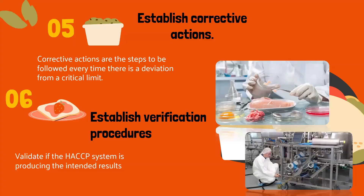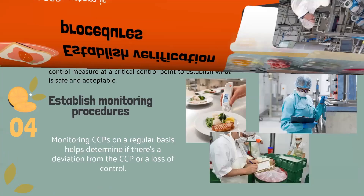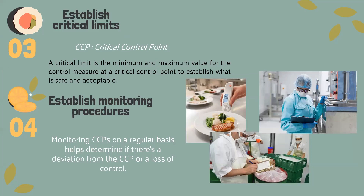Principle number three: establish critical limits. Once you determine which steps are a CCP, you must establish critical limits for each identified CCP. A critical limit is the minimum and/or maximum value for the control measure at a critical control point, used to establish what is safe and acceptable.